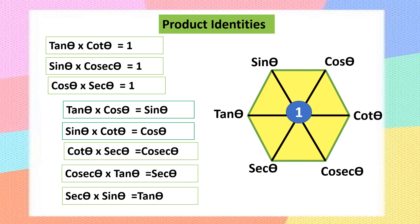To recap the product identities: tan theta times cot theta equals 1; sin theta times cosecant theta equals 1; cos theta times secant theta equals 1. For the alternating product: the product of any ratio and the one two positions away gives the ratio between them as the answer. That's almost 20 formulas so far using just this hexagon.